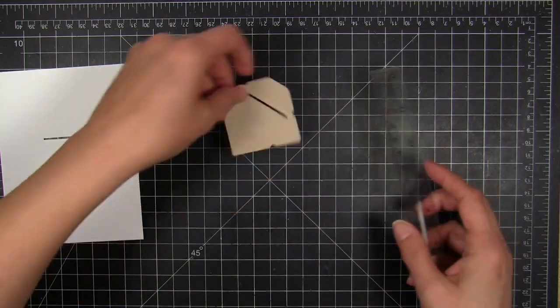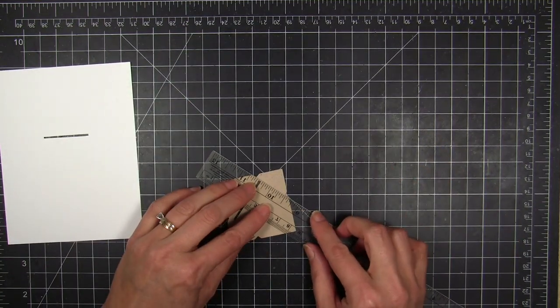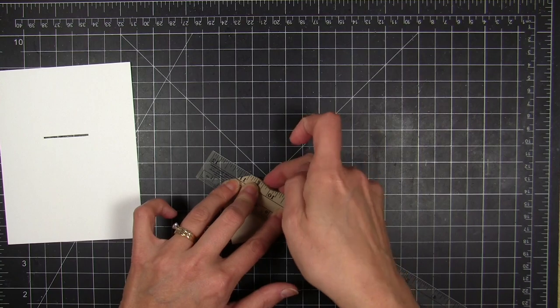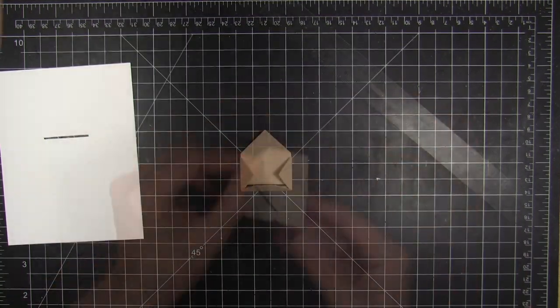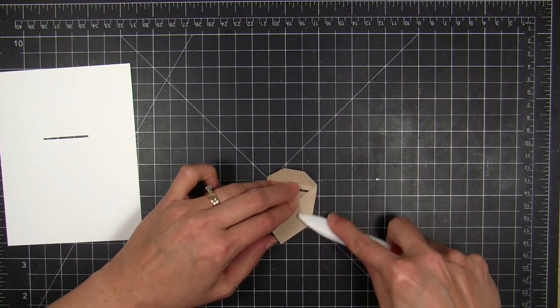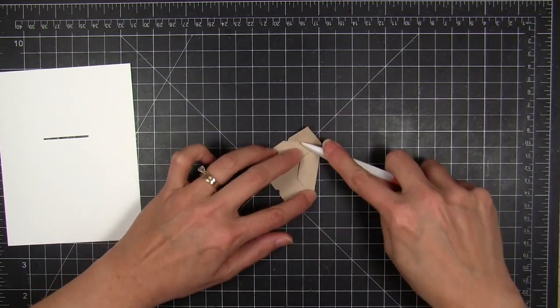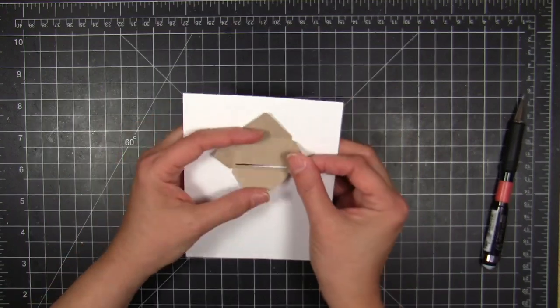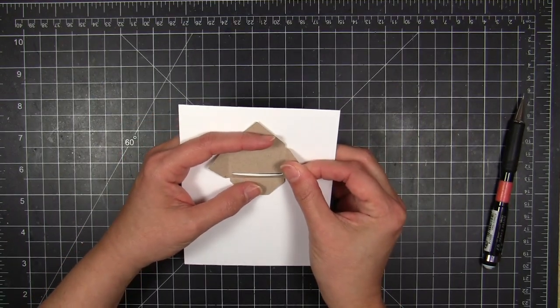Once I have all of those little flaps properly creased there with the straight edge of my ruler, I can go ahead and take my Teflon bone folder and reinforce those crease lines nicely because it is a heavier weight. You really want to do that to get a nice crisp fold there. With text weight paper you don't have to worry about it too much, you can just do it with your fingers.